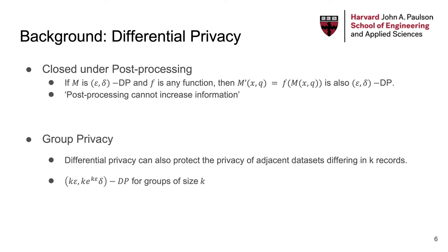Another useful property is that differential privacy provides protections for small groups of individuals. In general, epsilon-delta differential privacy is designed to protect the privacy between neighboring databases which differ only in one row. This means that no adversary with arbitrary auxiliary information can know if one particular participant is in the dataset or not. However, this is also extendable to protect databases differing in more than one row — for example, a family. A simple hybrid argument can show that for a pair of datasets that differ by K rows, there are still privacy guarantees, with some degradation in epsilon-delta parameters.